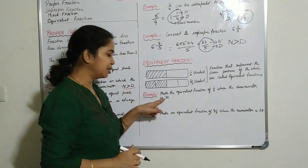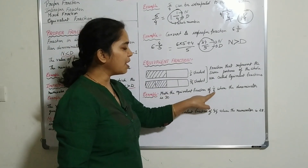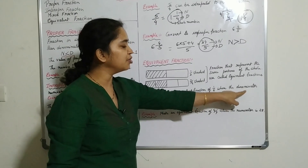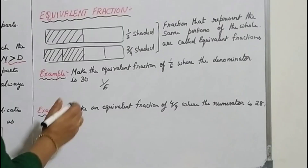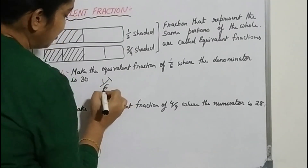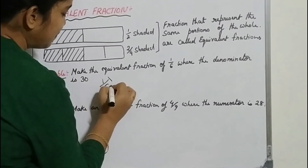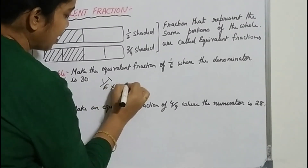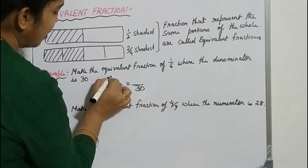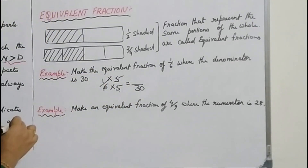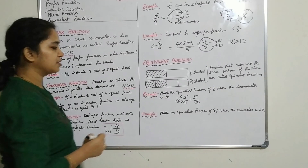The question is: make an equivalent fraction of 1 by 6 where the new denominator is 30. The denominator should be 30, so 30 divided by 6 is 5. Since you multiply the denominator by 5, you must also multiply the numerator by 5, giving 5 by 30. So 5 by 30 is the equivalent fraction.